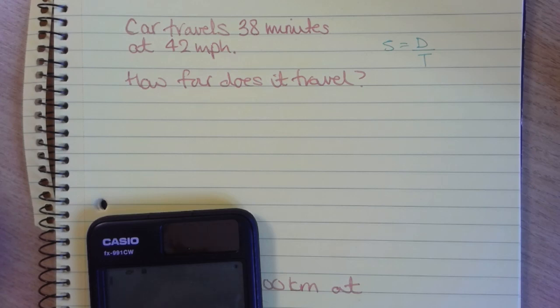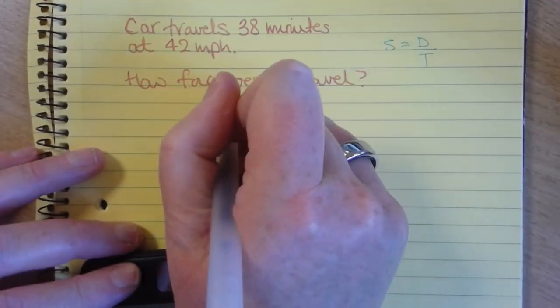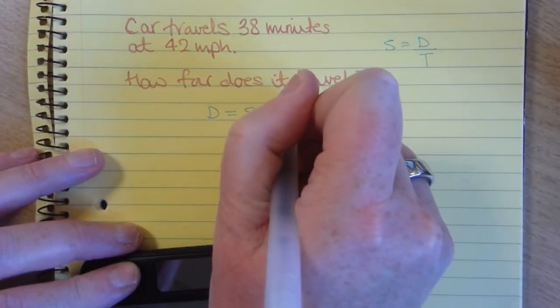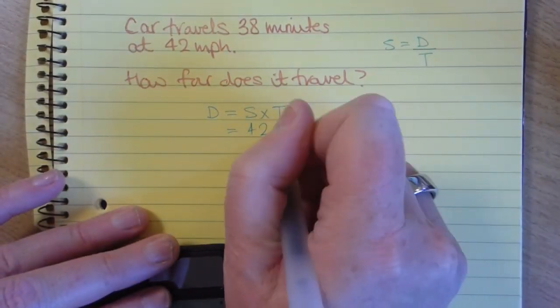The distance is what we want to find. The speed is 42, but we need the time to be in hours. So if we rewrite it as distance equals speed times time, our speed is 42 miles per hour.